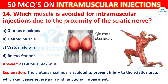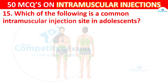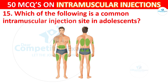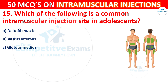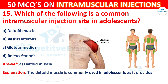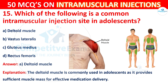Question 15: Which of the following is the common intramuscular injection site in adolescents? Options are: deltoid muscle, vastus lateralis, gluteus medius, or rectus femoris. The correct answer is A, deltoid muscle. The deltoid muscle is commonly used in adolescents as it provides sufficient muscle mass for effective medication delivery.